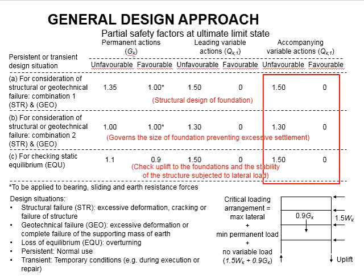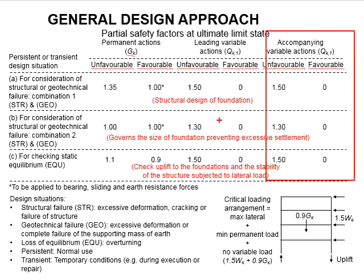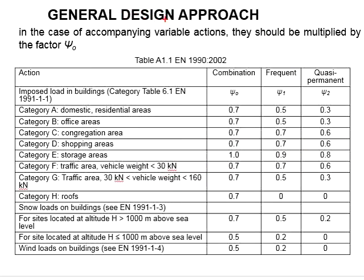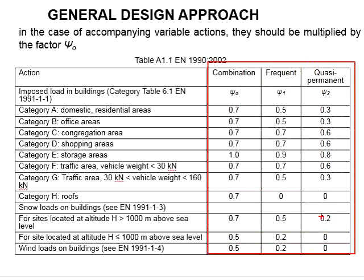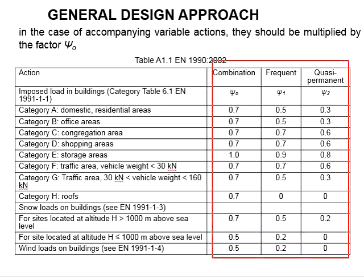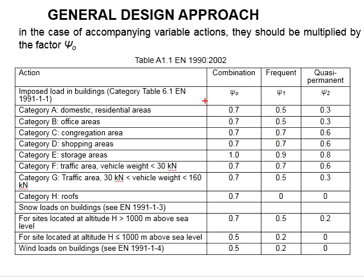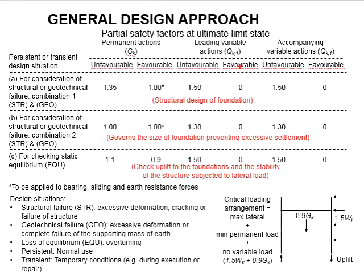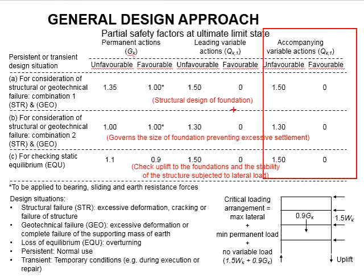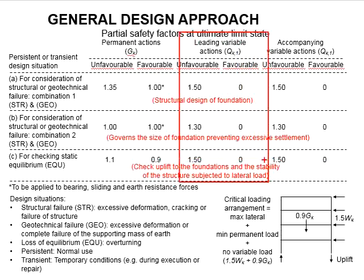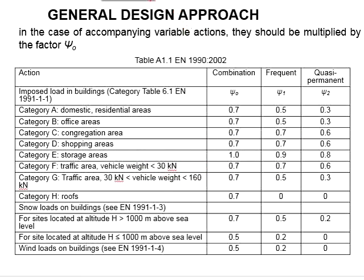The factor of safety for the accompanying variables is the same as the leading variable. However, the accompanying variable actions need to be multiplied by the psi factors for variable actions, which are given here. Due to this, the magnitude of accompanying variable actions is normally slightly lower than the leading variable actions. This is applied because it is very rare that all variable actions are at their maximum magnitude at the same instance — otherwise the design would become overly conservative.